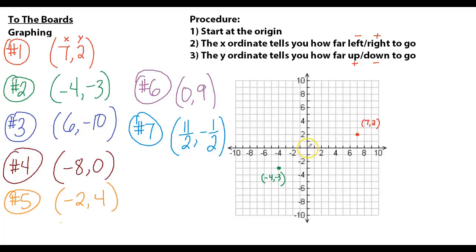Number three: 6, negative 10. I need to go to the right 6, because again x tells me my right and left, y's tell me my up and down. So I go 6 to the right and then down 10. 6, negative 10, all the way down there is that point.